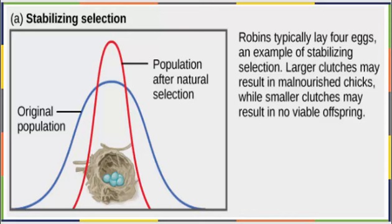In stabilizing selection, a population moves away from two extremes towards a happy medium. So, a robin, for example, typically lays four eggs. This is an example of stabilizing selection. If you have more than four eggs, you may end up with malnourished chicks, as it's hard to feed a lot of them, while if you only have one or two eggs, you might actually end up with no viable offspring at all. It's better to shoot for the middle.